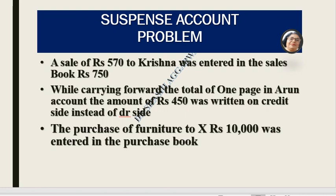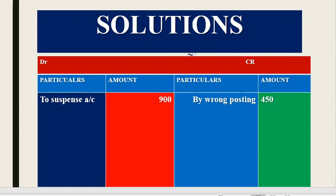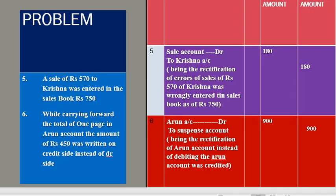For Error 6: While carrying forward the total of page 1 in Arun's account, Rs. 450 was written on the credit side instead of the debit side. Since debit was posted as credit, both sides are wrong by Rs. 450. To rectify, we apply double the amount — Rs. 900 — so we debit Arun's account by Rs. 900 and credit the suspense account by Rs. 900, being the rectification of Arun's account being credited instead of debited.